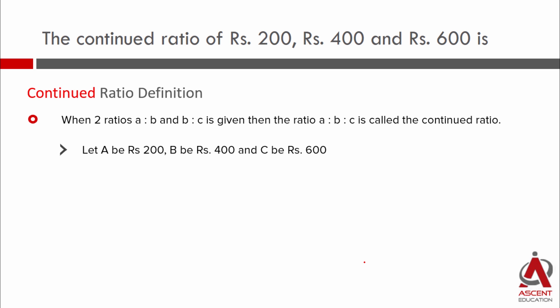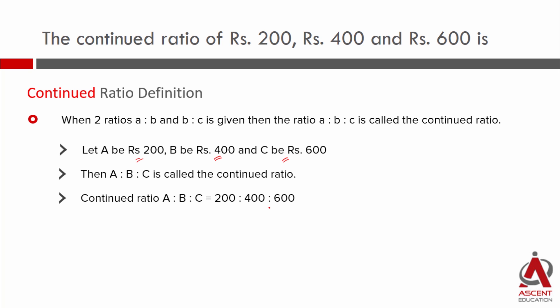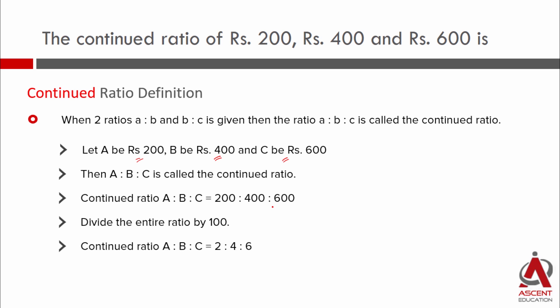The data given are three values: Rs. 200, Rs. 400, and Rs. 600. We assign A as 200, B as 400, and C as 600. So A is to B is to C equals 200 is to 400 is to 600. Dividing the entire ratio by 100, we are essentially left with 2 is to 4 is to 6.